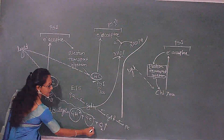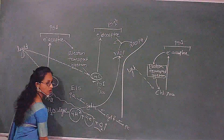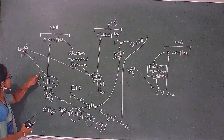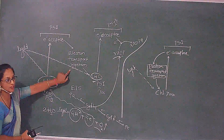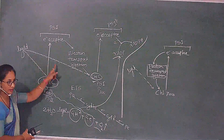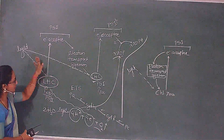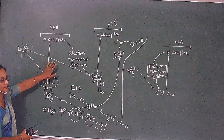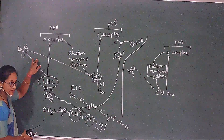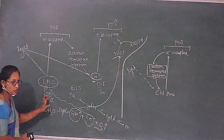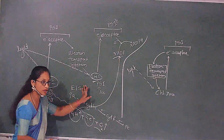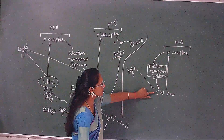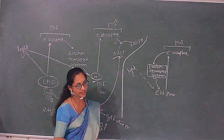And here oxygen is being released. The discontinuous lines shown in the diagram — those that are not continuous — represent light. PS2 also absorbs light and PS1 also absorbs light; wherever shown in discontinuous form, it represents light.